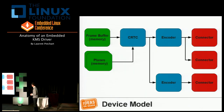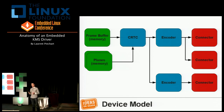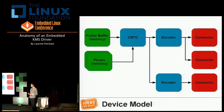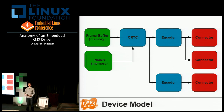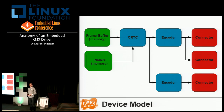Planes are a more recent addition to the KMS API. They are also memory objects, exactly like a frame buffer. Some hardware can overlay additional images on top of the main frame buffer — that's what planes are for. They are pieces of memory you give to the CRTC to overlay on top of your main frame buffer, supporting hardware overlays. If we were redesigning the API today, we probably wouldn't separate the main frame buffer and planes — the only real difference is Z-order — but for historical reasons they are currently separated.